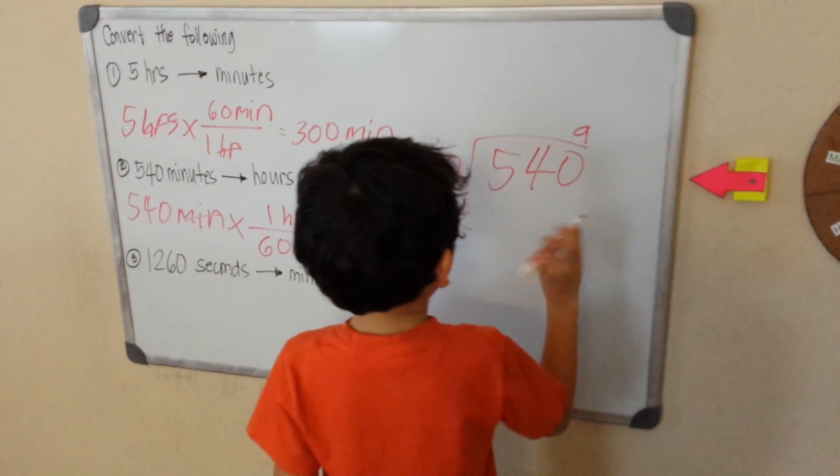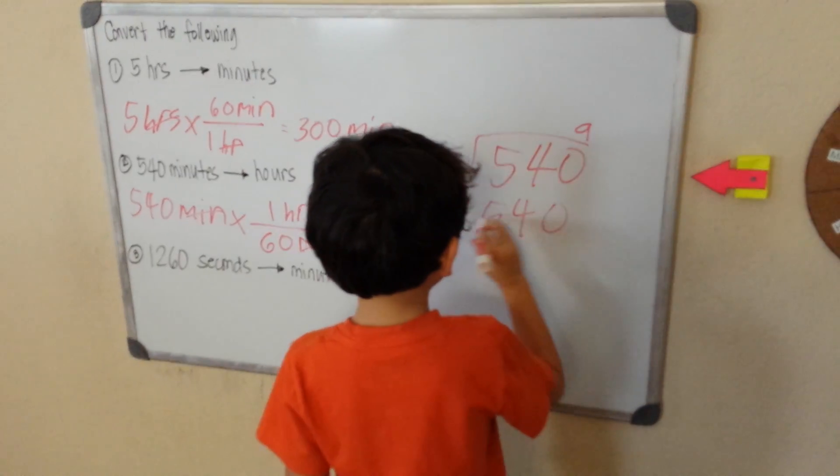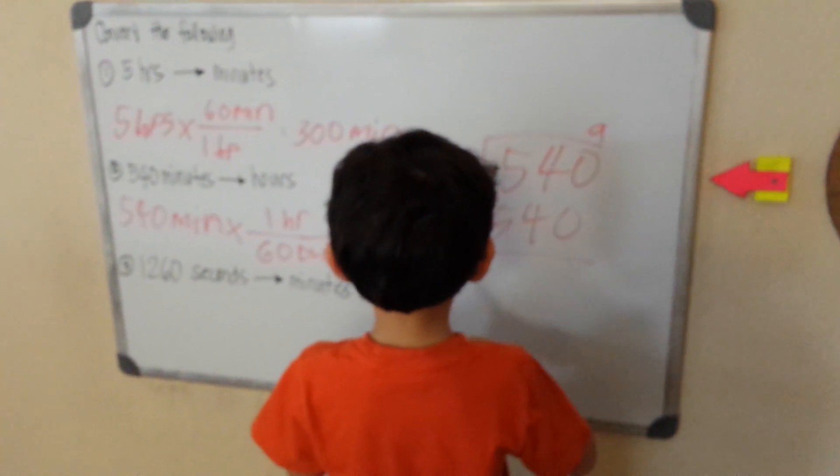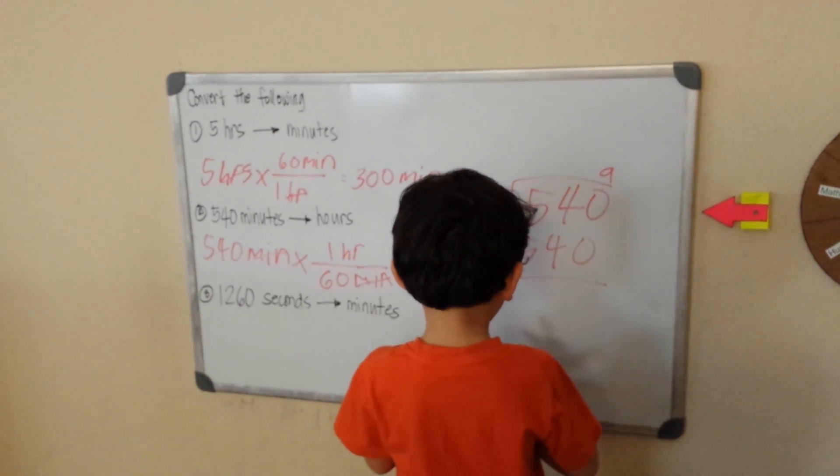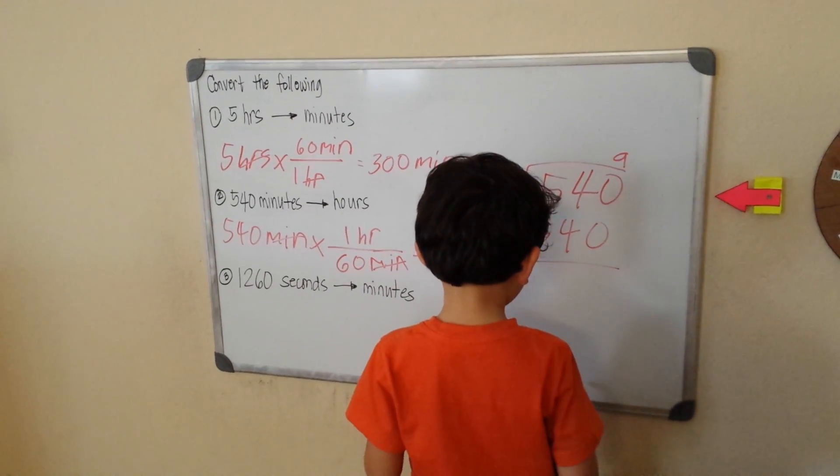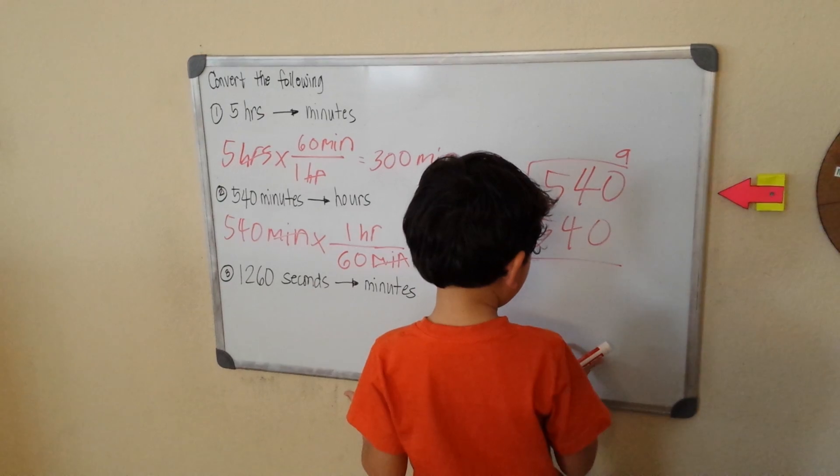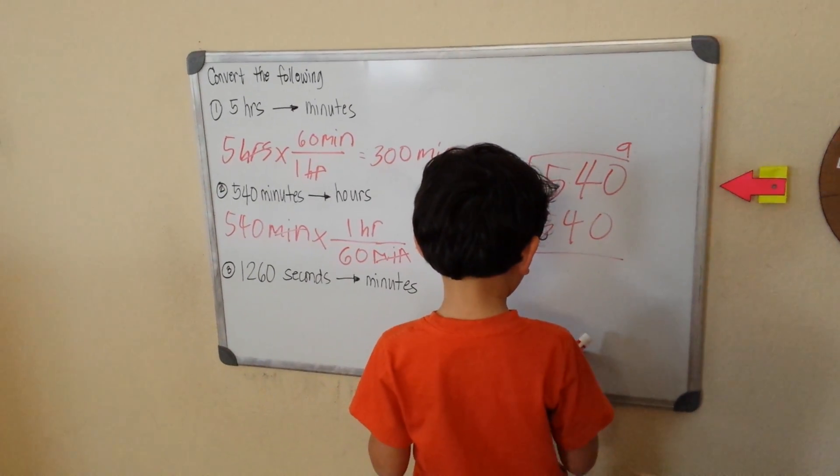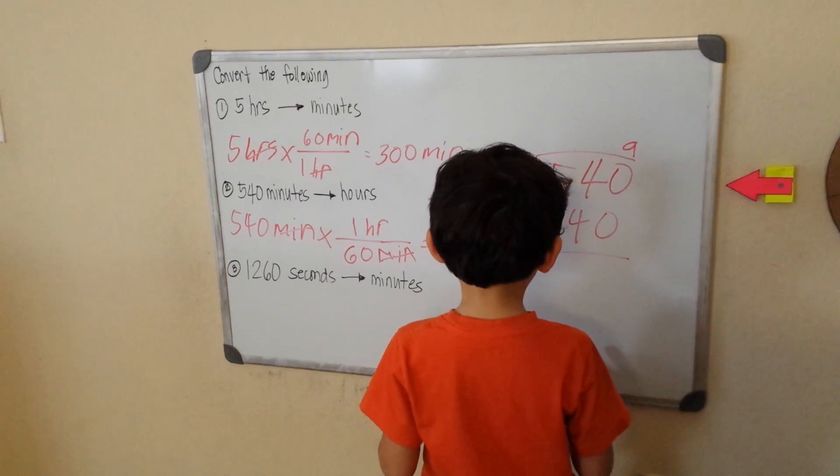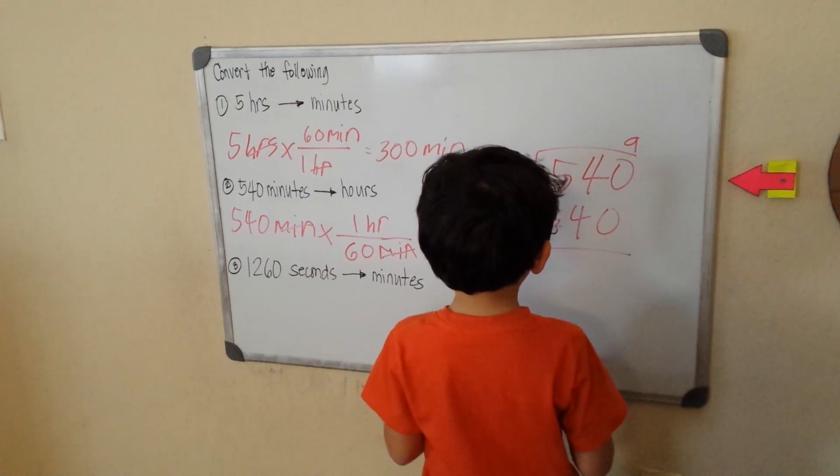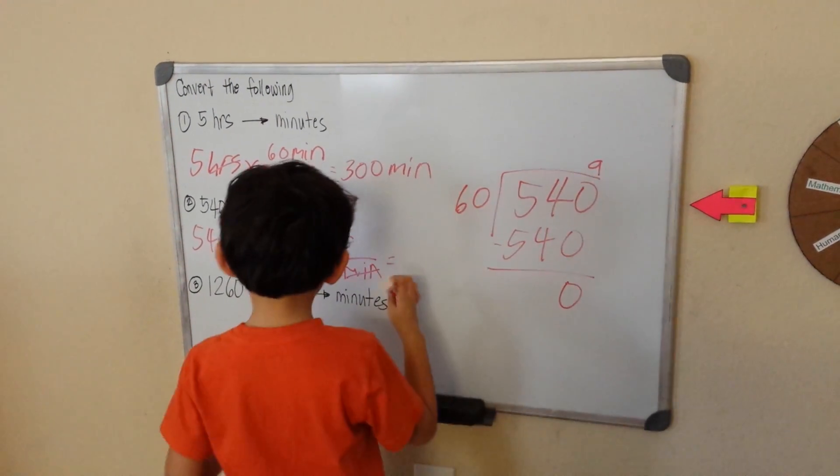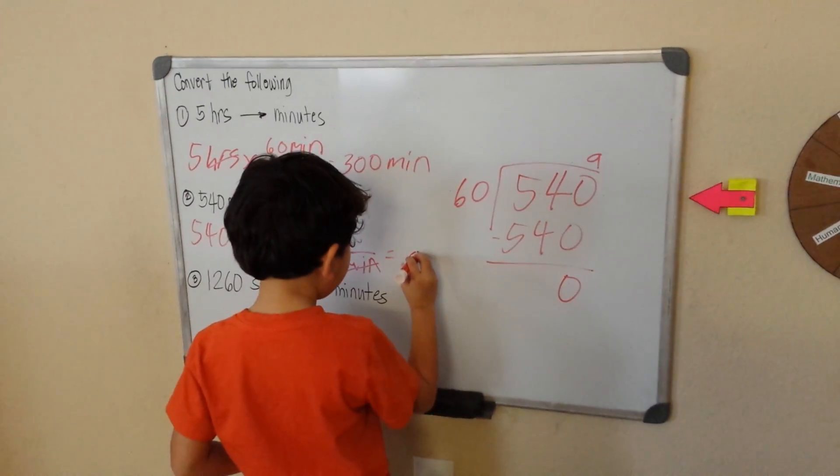Let me count. Let's see: 60, 120, 120, 180, 240, 240, 300, 360, 360, 420, 480, 540. Yes, so that equals 120. That will be 9 hours.